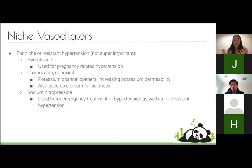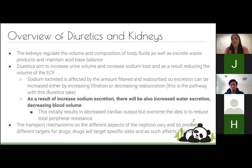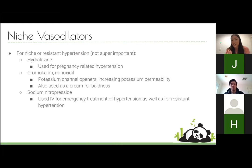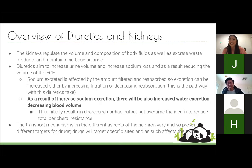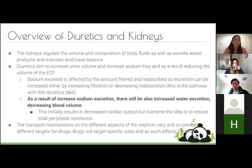Important buzzwords: asthma is a major contraindication for beta blockers. Calcium channel blockers are better for arrhythmias because they slow the heart. Broadly, ACE inhibitors are the best first choice if there are no specific problems. If the patient develops a cough from an ACE inhibitor, switch to an ARB. Most importantly, if a patient has just been diagnosed with mild hypertension and hasn't tried anything, lifestyle management comes first.